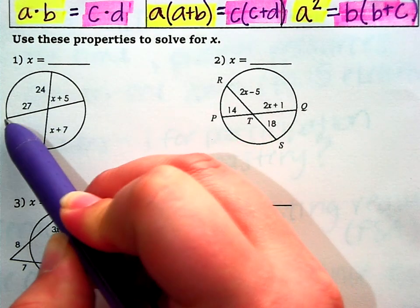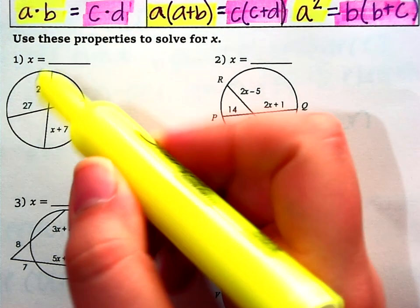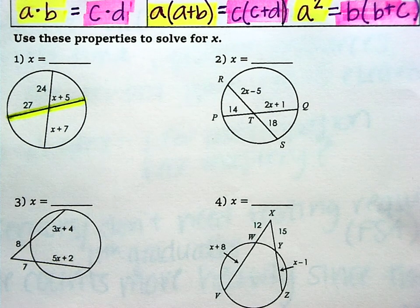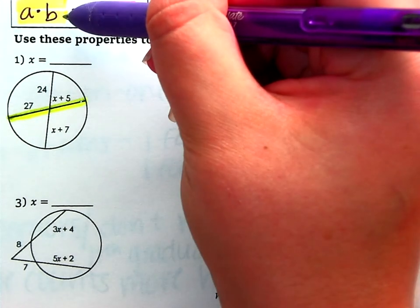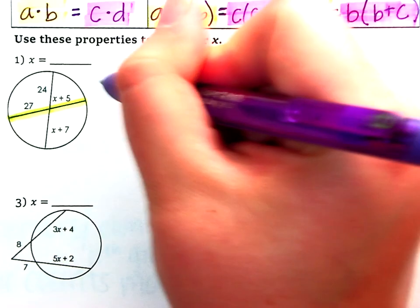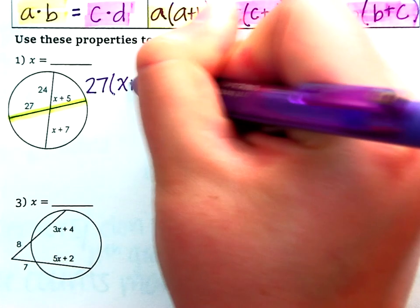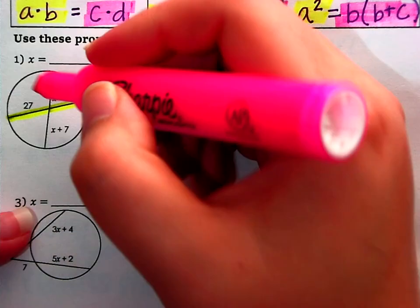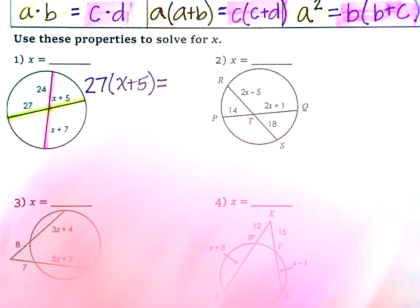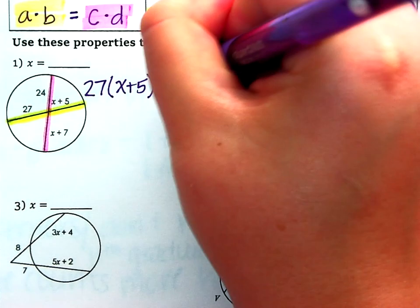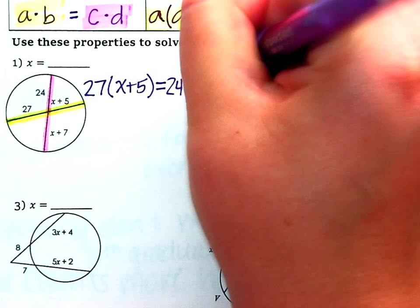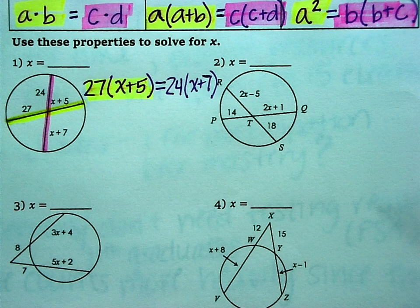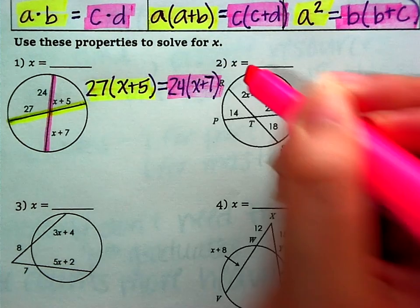So number one, you have intersecting chords. So I'm just going to highlight the chord pieces. So this chord is made up of 27 and x plus 5. So with this scenario, we need to multiply them. We're going to do 27 times x plus 5 equal to the other chord made up of 24 times x plus 7. So those are the pieces of that chord. We have our yellow multiplied to each other and the pink multiplied to each other.